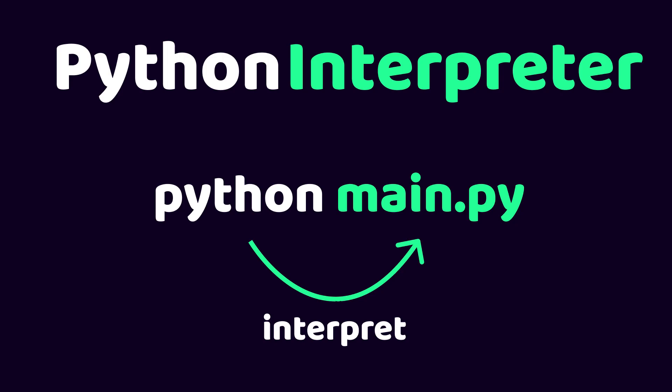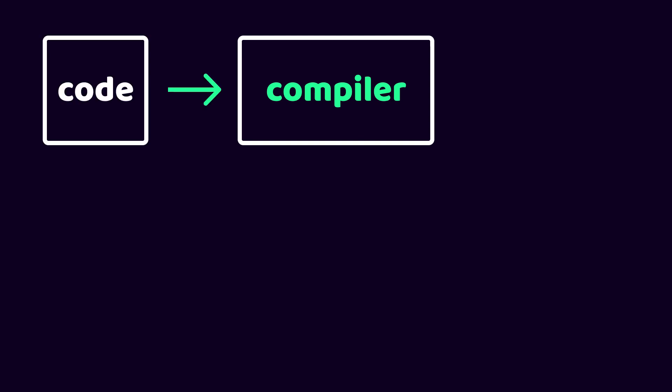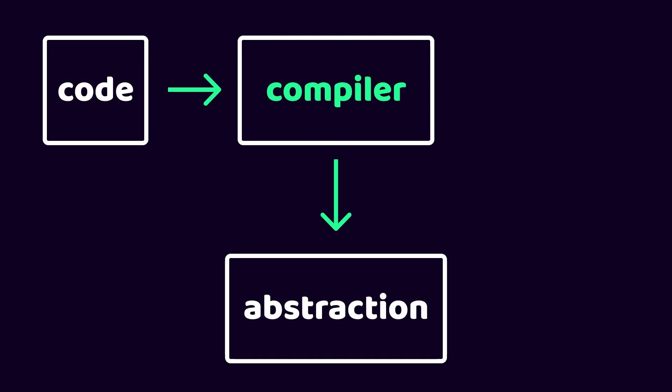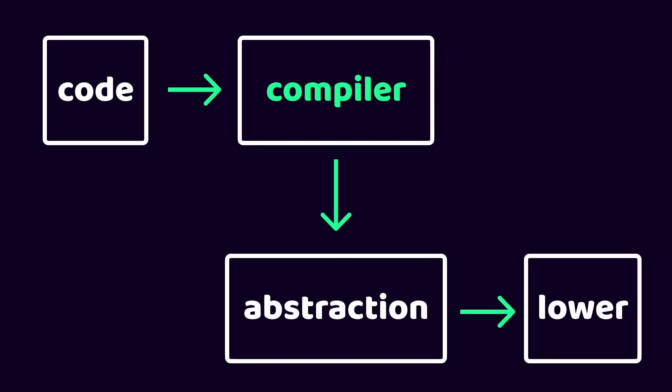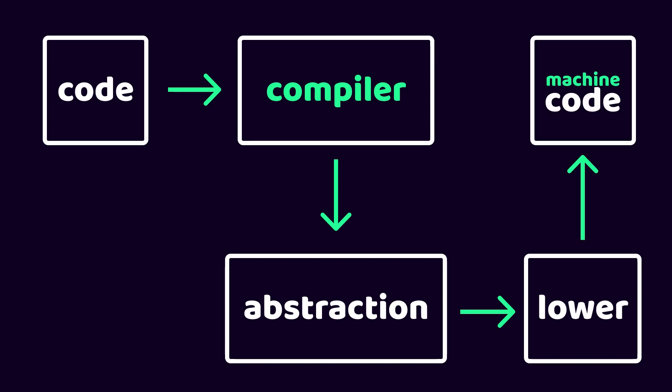This is different from what you may know as a compiler, which also takes in code, but it then abstracts it, optimizes it, and lowers it to an intermediate language to then be translated to machine code. After compilation, the machine code can then be executed.